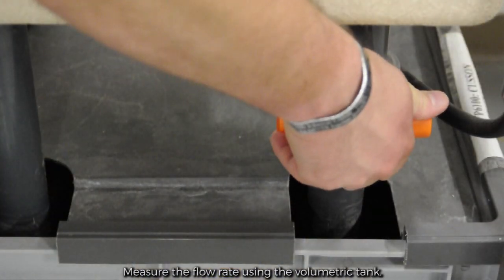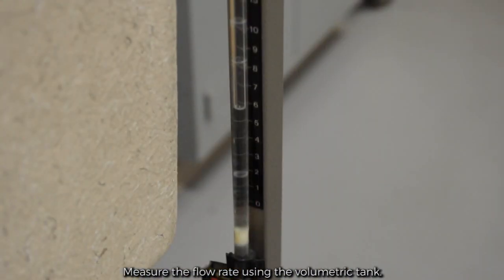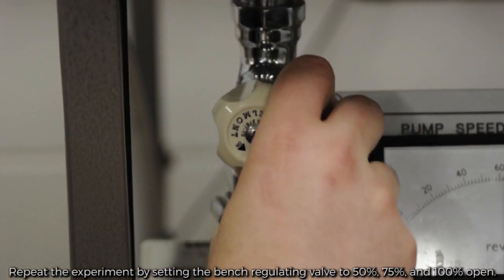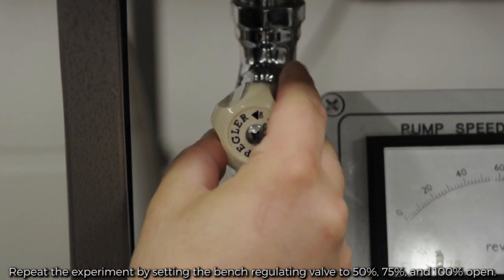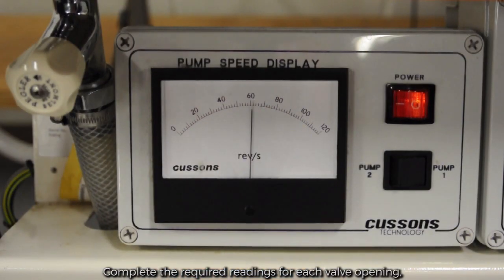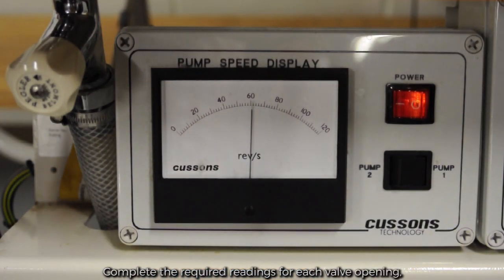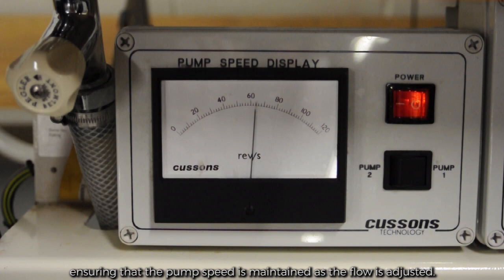Measure the flow rate using the volumetric tank. Repeat the experiment by setting the bench regulating valves to 50, 75, and 100% open. Complete the required readings for each valve opening, ensuring that the pump speed is maintained as the flow is adjusted.